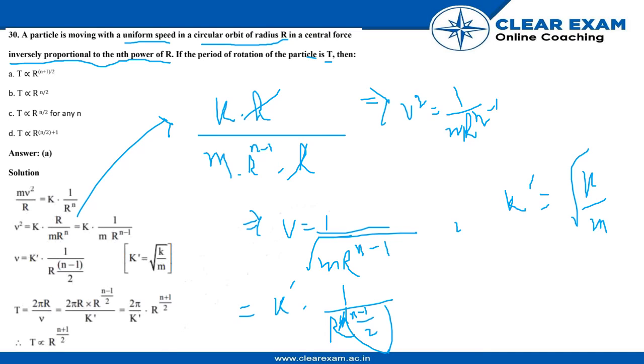So T is also given by 2 pi r by v. So what we are going to do is simply put the value of v here.